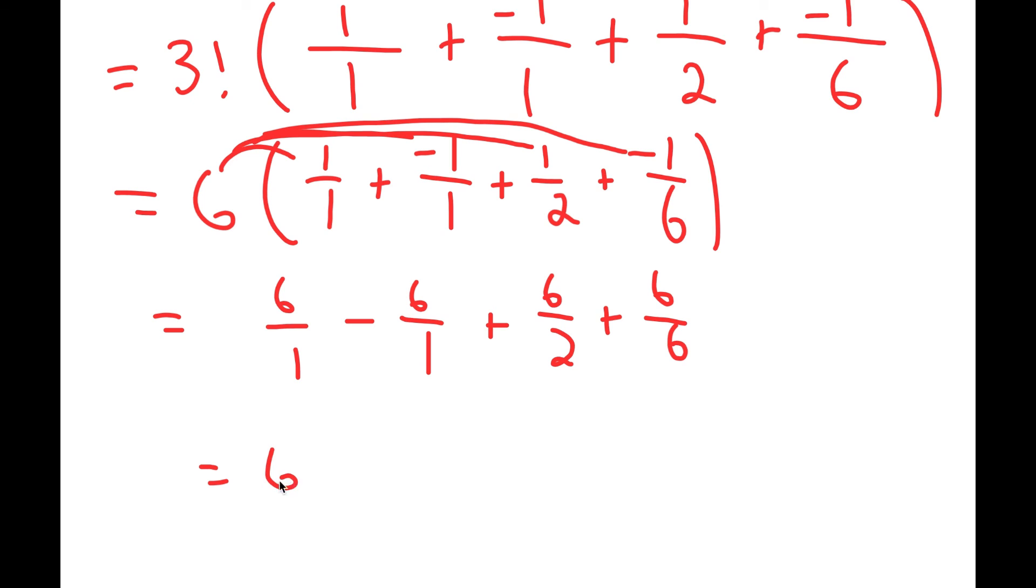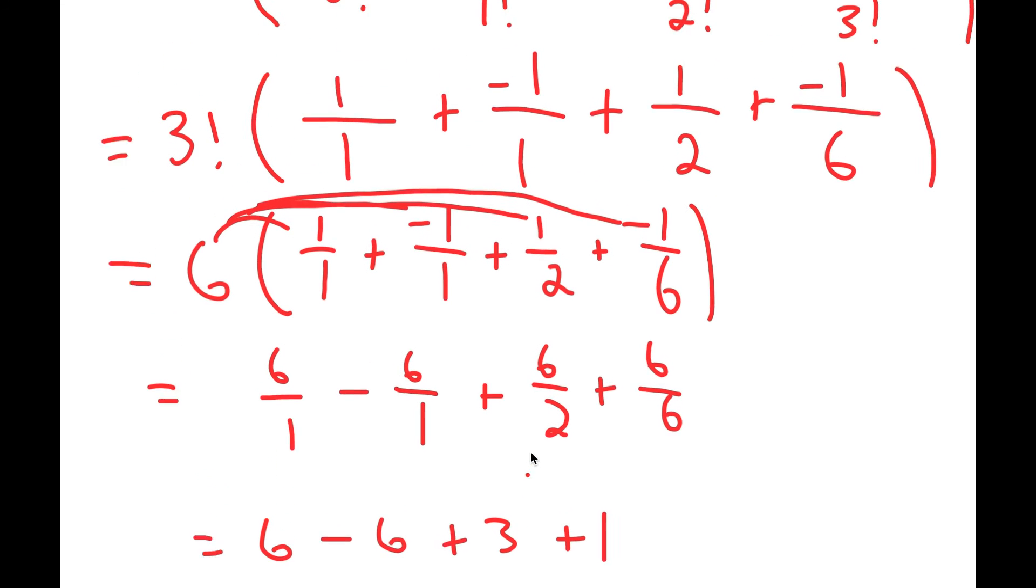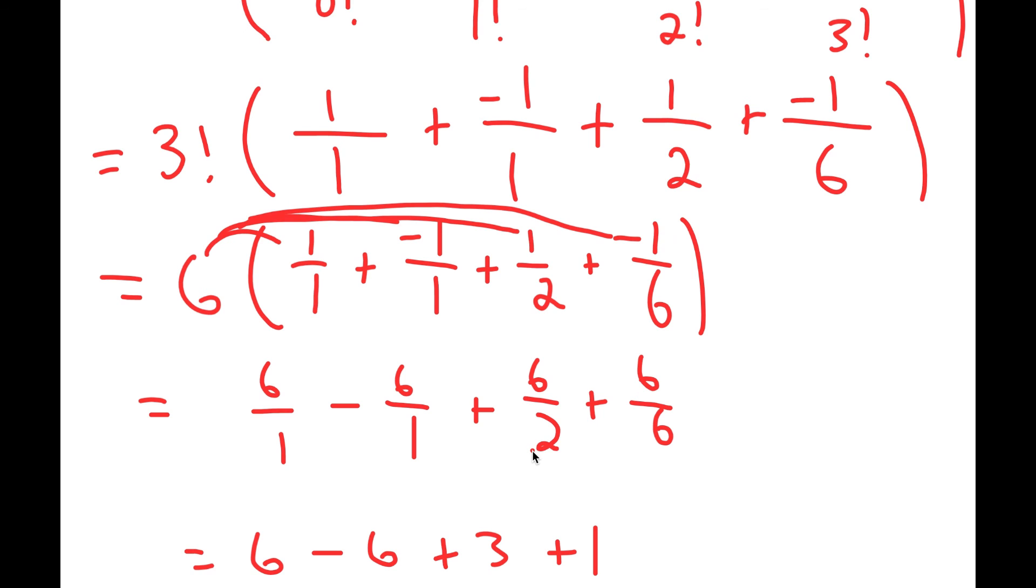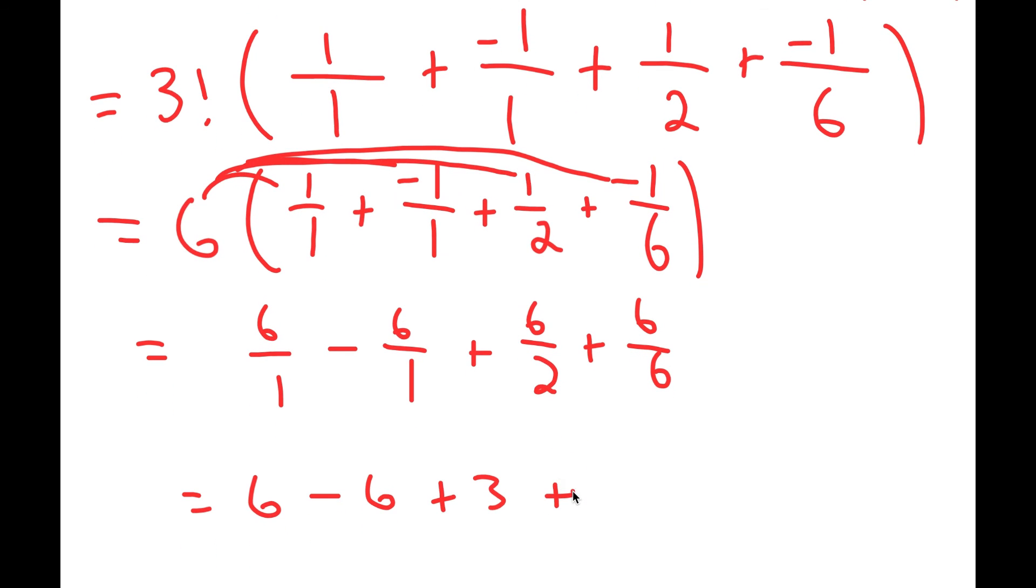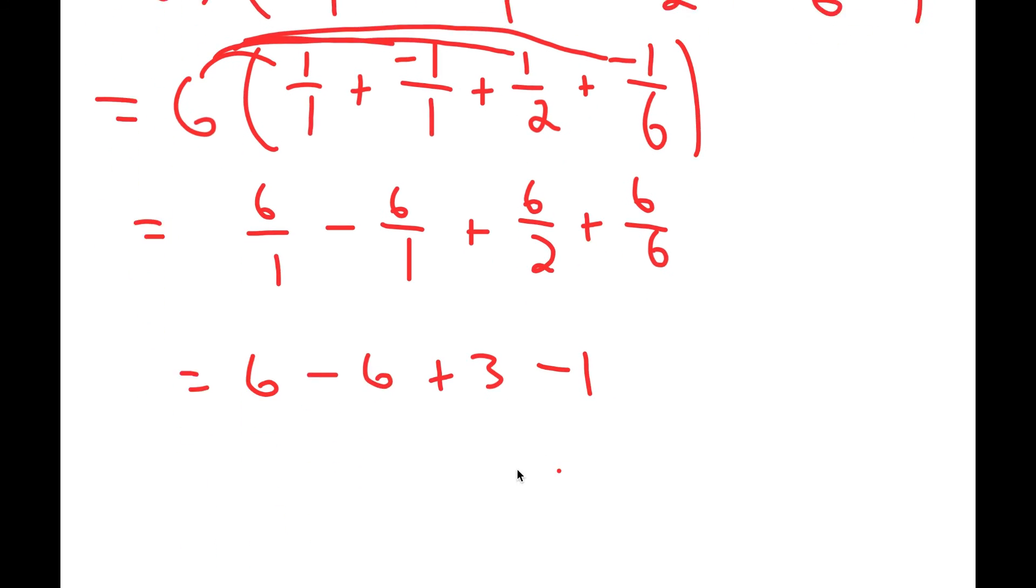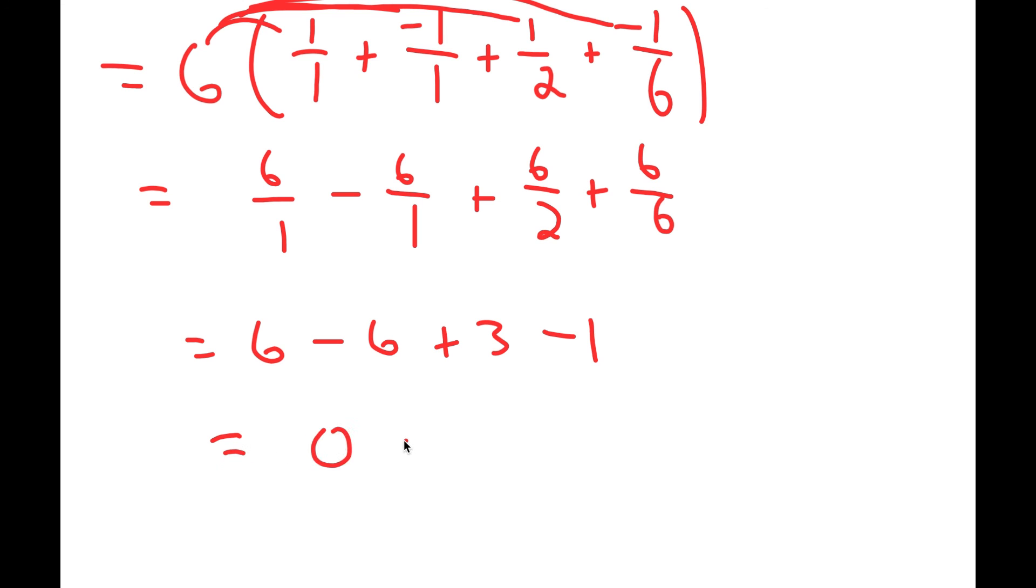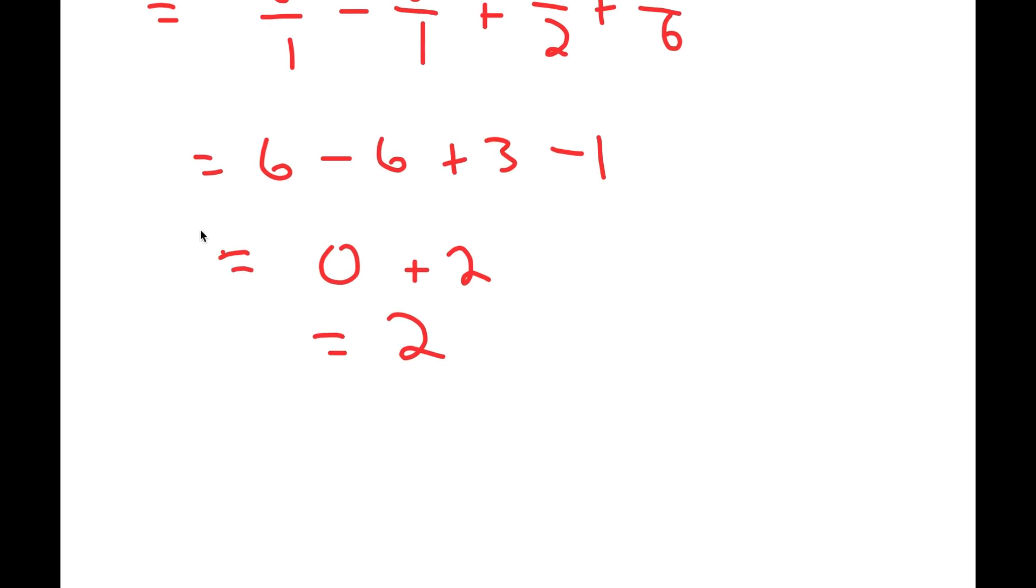And this turns into six minus six plus three plus one. So this is actually supposed to be minus one, which turns into zero plus two, which is equal to two, meaning sub factorial of three is two.